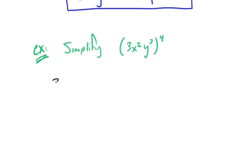This 4 is going to distribute to everything inside. So we should get 3 to the 4th, x squared to the 4th, and y cubed to the 4th. This is how you apply this external set of parentheses - you just distribute that 4 to everything.